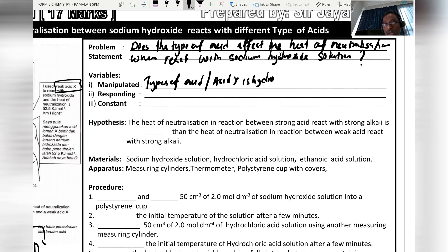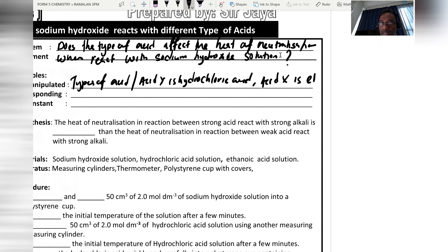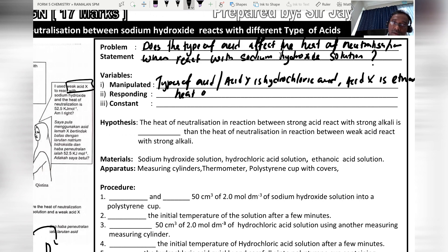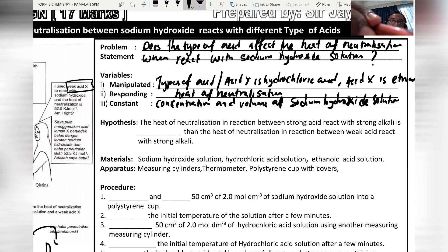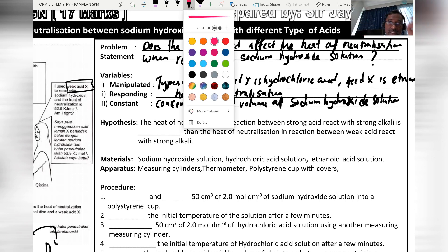Acid X is ethanoic acid. The responding variable is the heat of neutralization. The constant variable is the concentration and volume of sodium hydroxide solution.